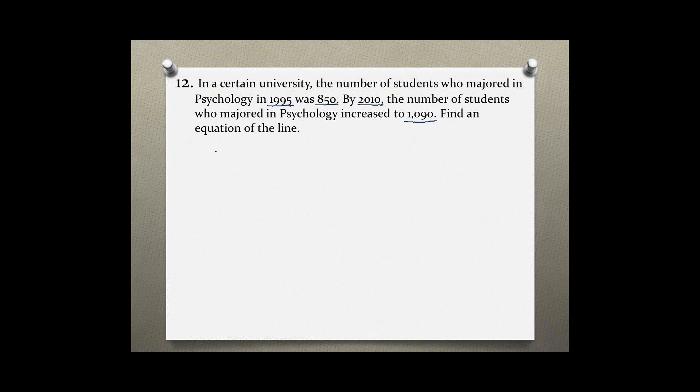You can use this data to write two points. So, calling 1995 the x value and 850 the y value, and also 2010 the x value and 1,090 the y value. When you are given two points, you can use the slope formula.